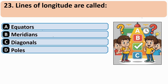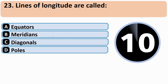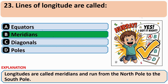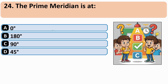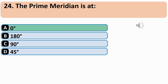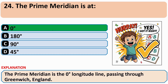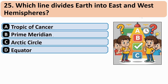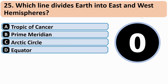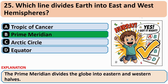Lines of longitude are called? The correct answer is B — meridians. The prime meridian is at? The correct answer is A — zero degrees. Which line divides the earth into east and west hemispheres? The correct answer is B — the prime meridian.